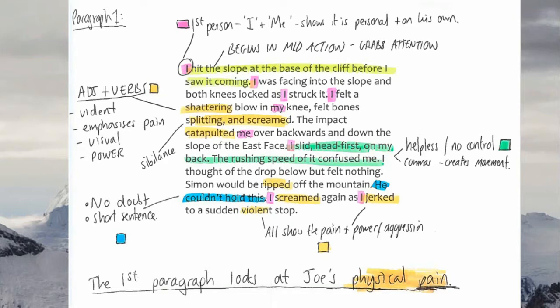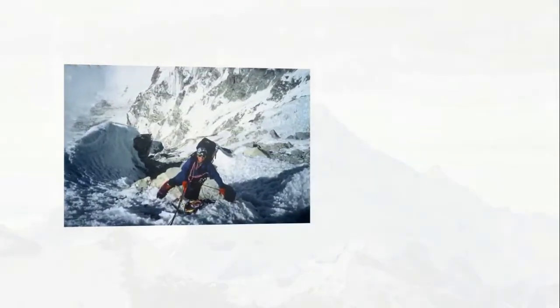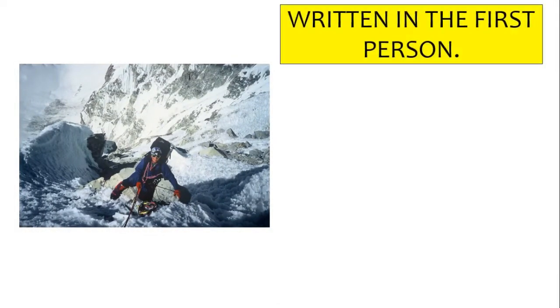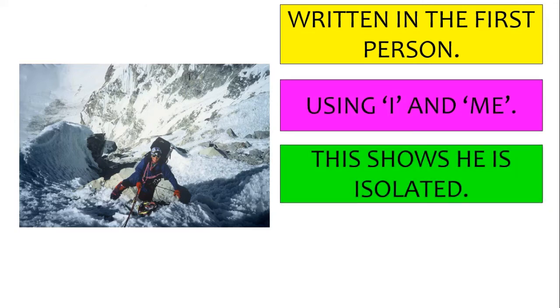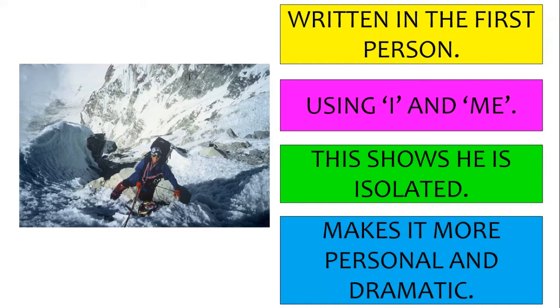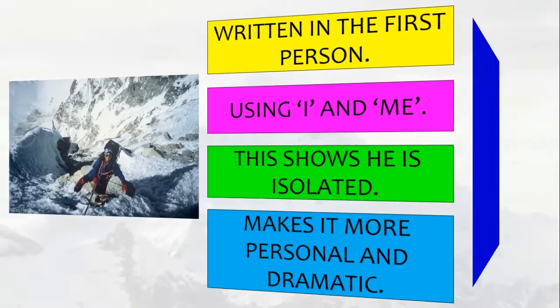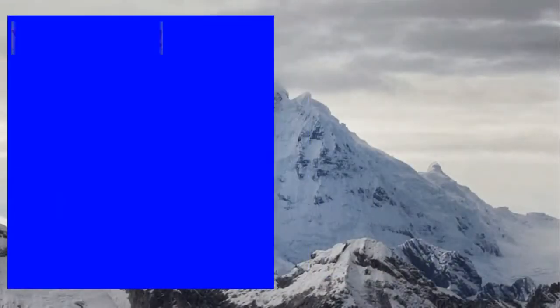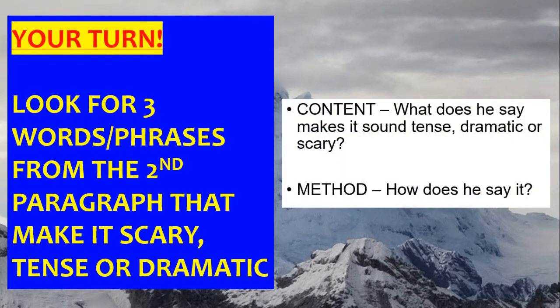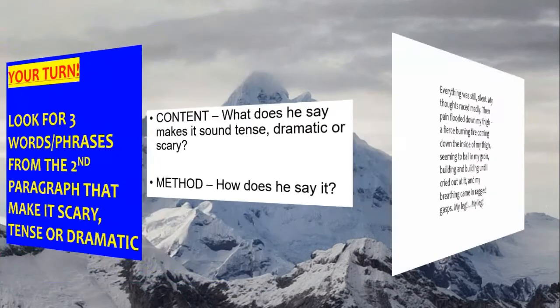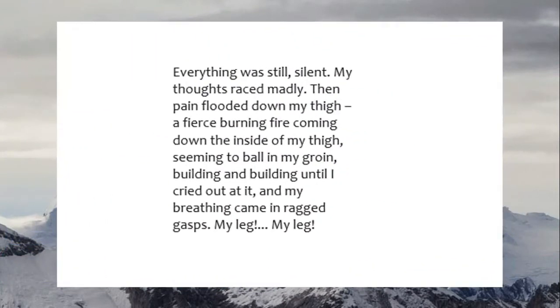The first paragraph is essentially about Joe's physical pain. The second paragraph looks at his mental pain — in contrast to the first. So it's your turn now. I want you to look for three words or phrases from the second paragraph that make it scary, tense, or dramatic. Remember the two bullet points: content — what does he say to make it dramatic? — and method — how does he say it? What techniques does the writer use?